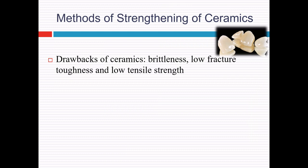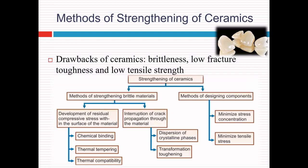Coming to methods of strengthening of dental ceramics. The dental ceramic prosthesis fails to exhibit the strength that we would expect from the high bond forces between atoms because there are numerous minute scratches and other defects present on the surfaces of these materials. We discussed the drawbacks of ceramics that includes brittleness, low fracture toughness and also low tensile strength. So we need to strengthen these dental ceramics in order to overcome these deficiencies. There are two broad approaches: methods of strengthening brittle material and methods of designing components.